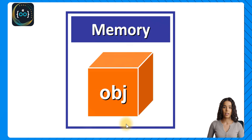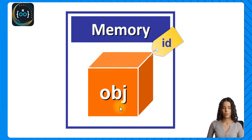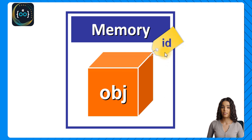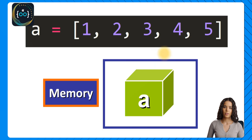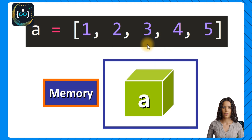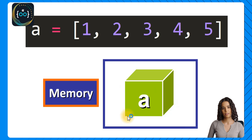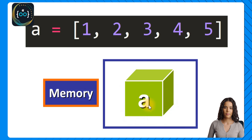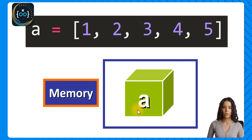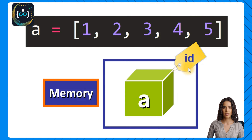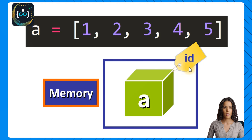An object is stored in memory when it is created after running the program. The particular place in memory where that object is stored can be identified by its ID, which is the memory location where it is being stored. For example, when we create a list object, that object is stored in memory — let's say this box represents that place in memory — and that place is referenced by the variable we assign it to. That object is assigned a unique ID, and the ID represents the memory location of the object.